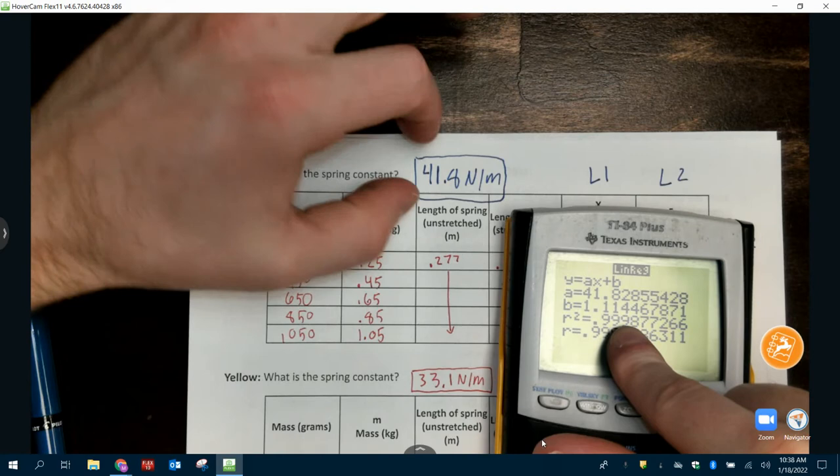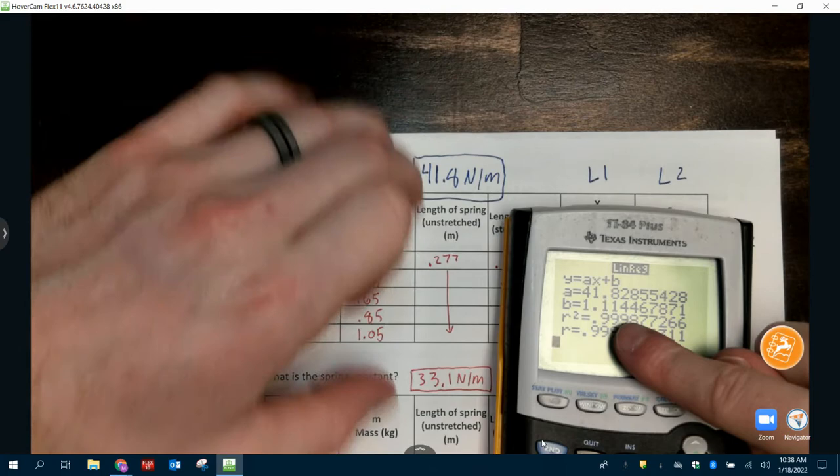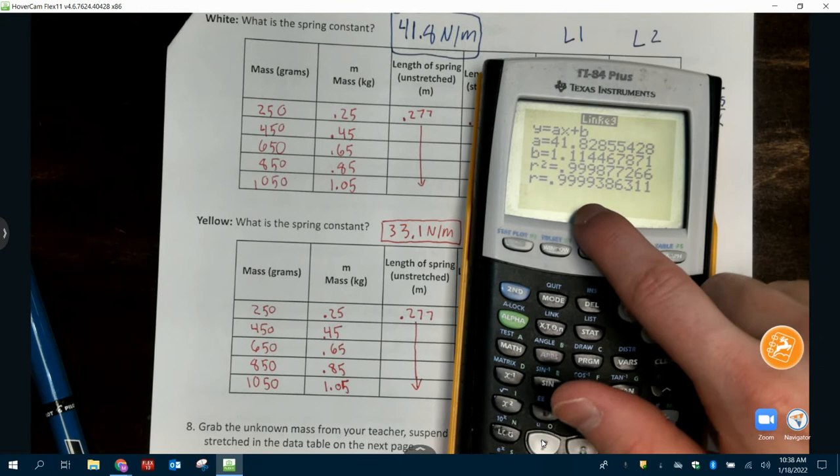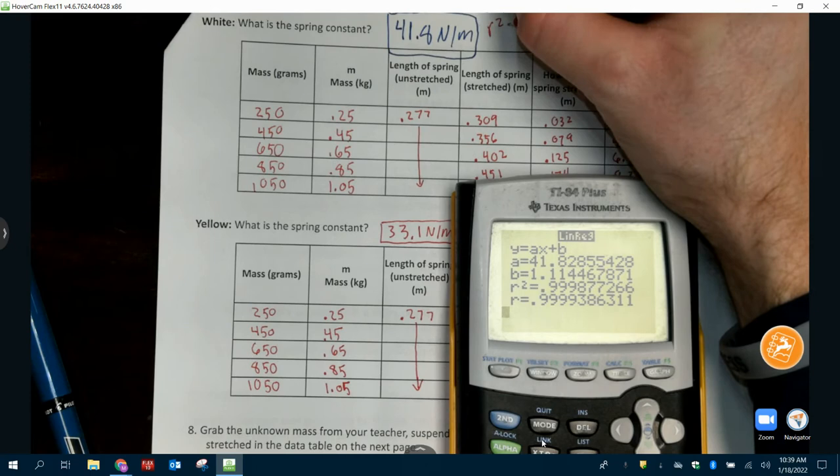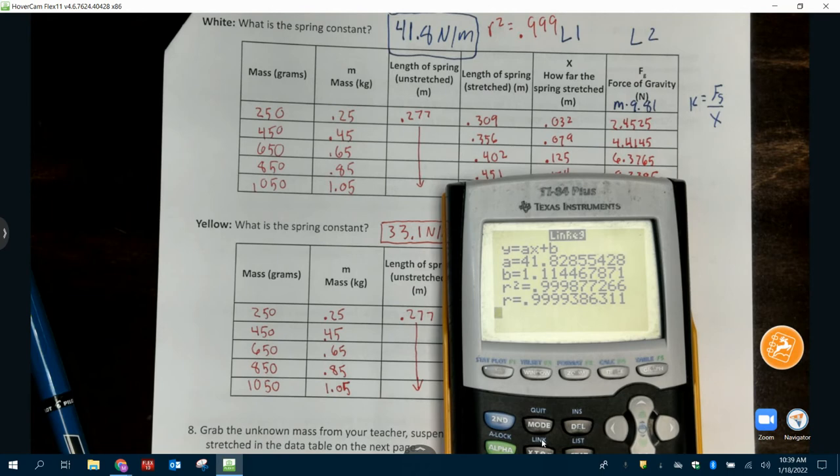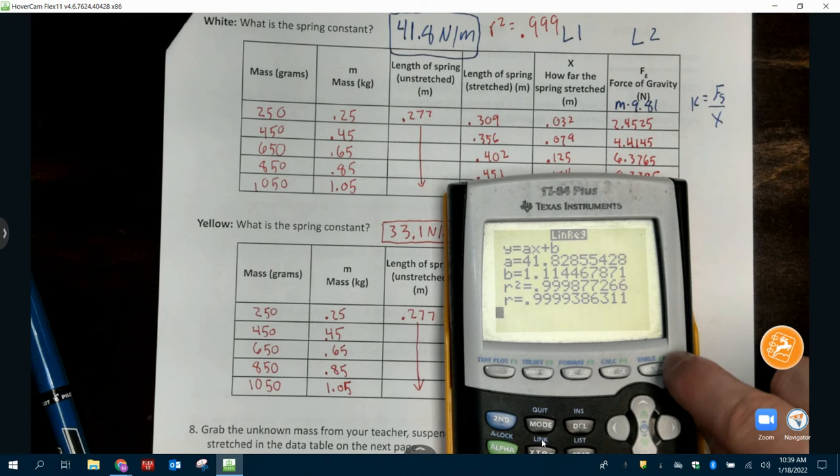This number up at the top, 41.8. That is your spring constant. This is what you're answering at the top for each color. You got to do this for all of them, not just the one that we just did. So you're going to do this procedure for all of them. That gives you, again, your R squared should be 0.99. Let's go ahead and write our R squared value. Give me three digits on the R squared. So my R squared, I'm going to note that mine is 0.999. That just shows me this number is really good. So do that on each of them.